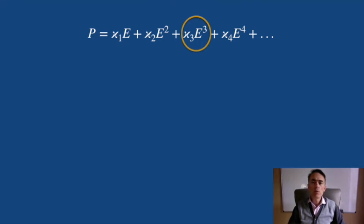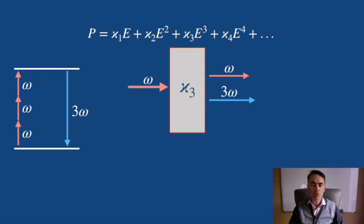If we include the third order term of the expansion, we can have third order effects like third harmonic generation, where three omega photons are combined to generate a three omega photon.